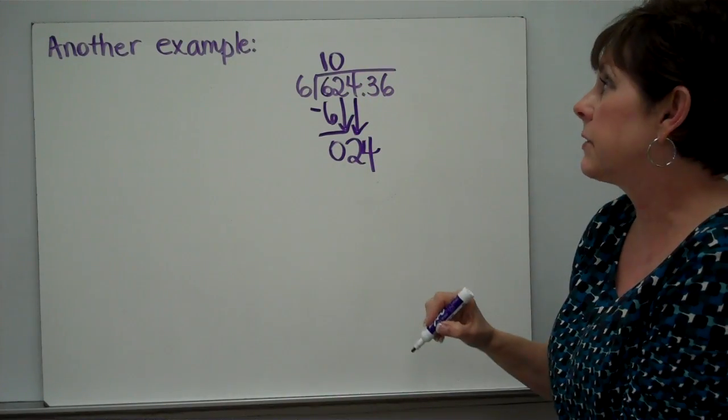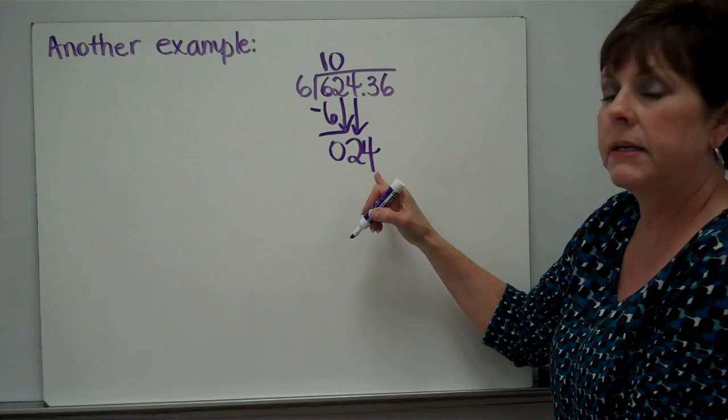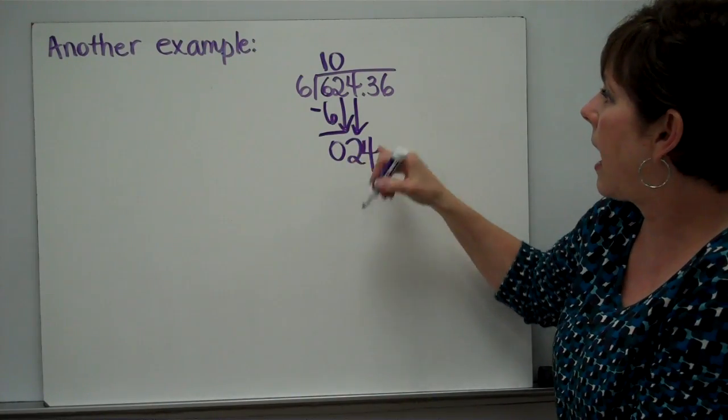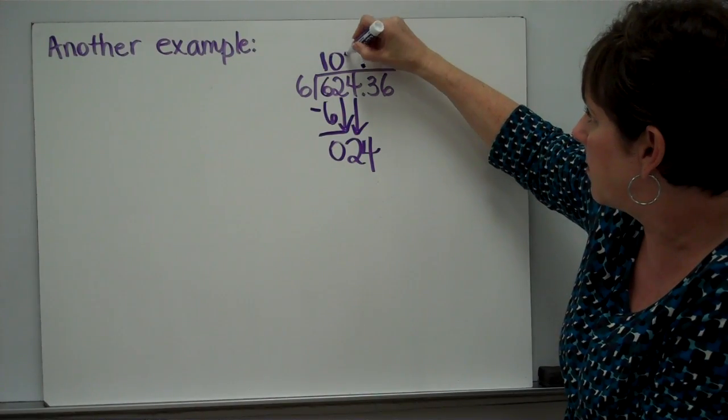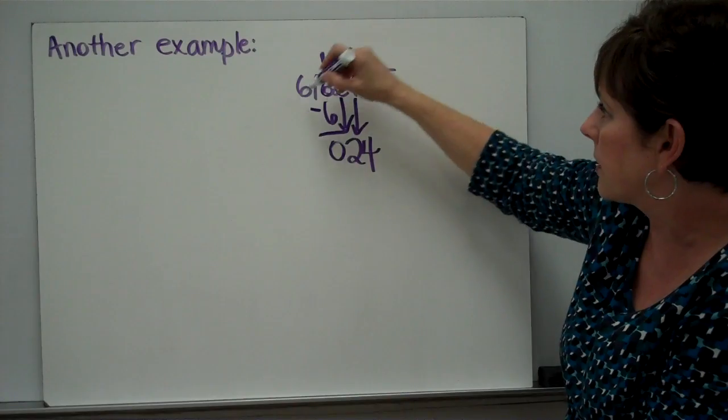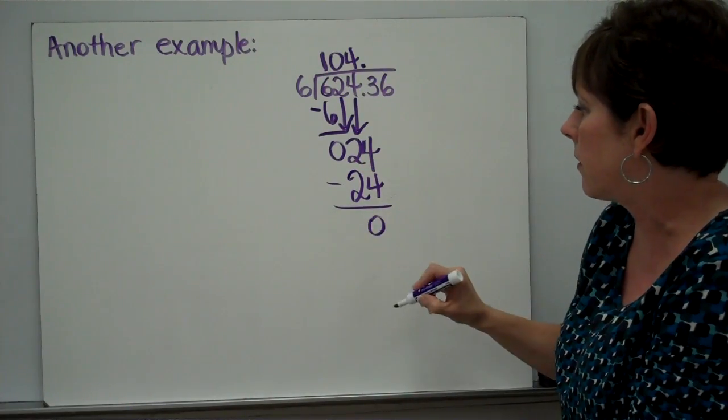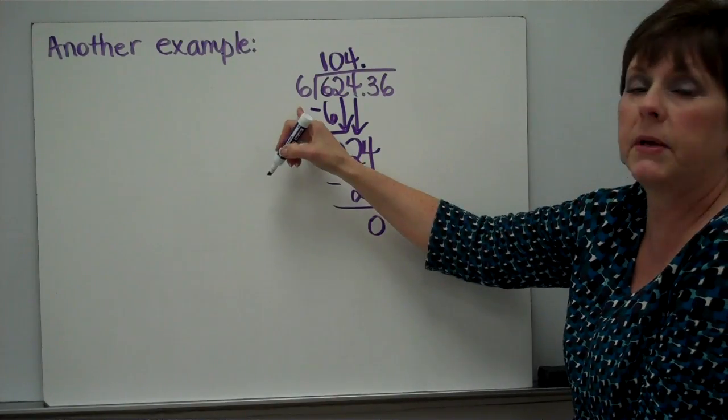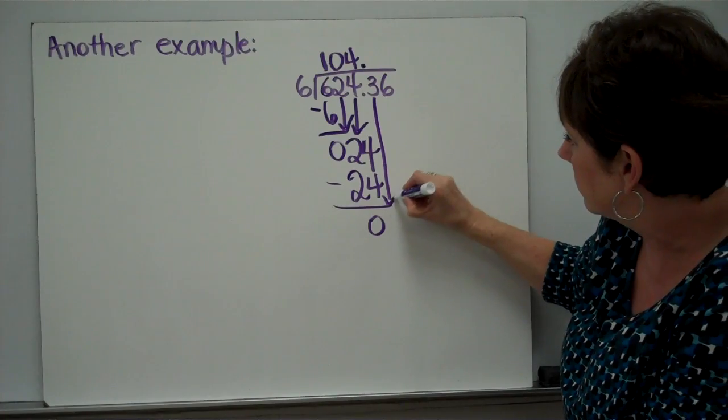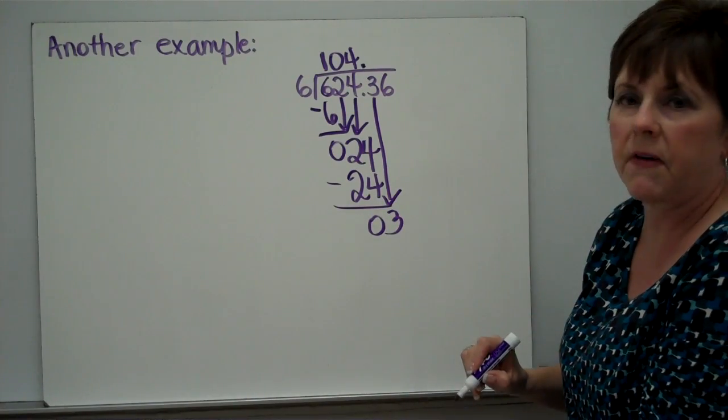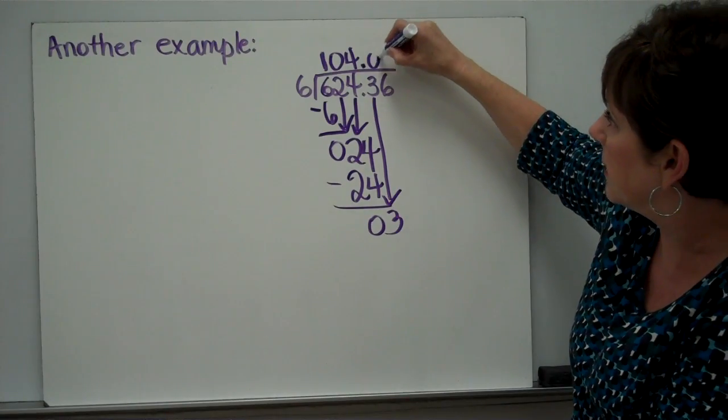24. Can 24 be divided by 6? Yes. How many times? I know that 6 times 4 is 24. So, I'm going to put a 4 here. 4 times 6 is 24. Subtract. 0. Compare. Can 0 be divided by 6? No. Bring down my next number. Can 3 be divided by 6? No. It's too little. Put a 0 here. Keep it there, though.